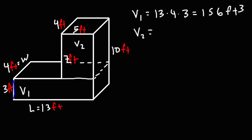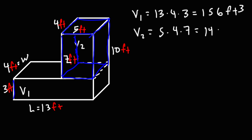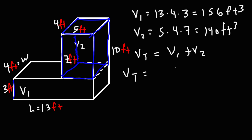Now let's focus on V2. For V2, we have a length of 5, a width of 4, and we already have the height of 7. So that's the volume of this rectangular prism highlighted in blue. The length is 5, width is 4, height is 7. 5 times 4 is 20, times 7, that's 140. So we have 140 cubic feet. And now we can calculate the total volume by adding the first two volumes: 156 plus 140, that's going to be 296 cubic feet.